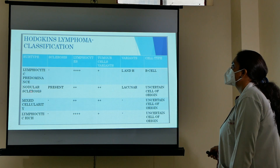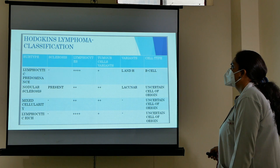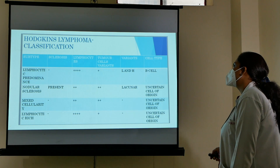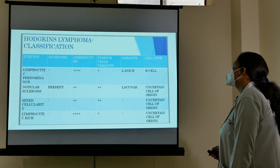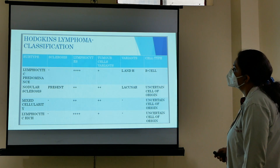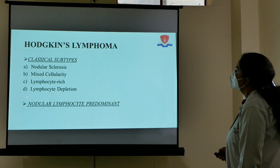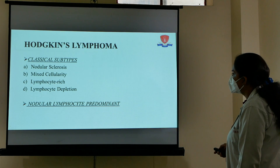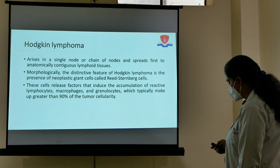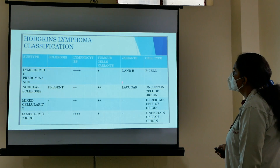Mixed cellularity means there are multiple types of cells, including eosinophils, plasma cells, and others. Lymphocyte-rich again has a very high lymphocyte count. The lymphocyte-predominant subtype is the nodular lymphocyte-predominant type, which is the one classified separately from classical Hodgkin's lymphoma — the classification is divided into classical and nodular lymphocyte-predominant.